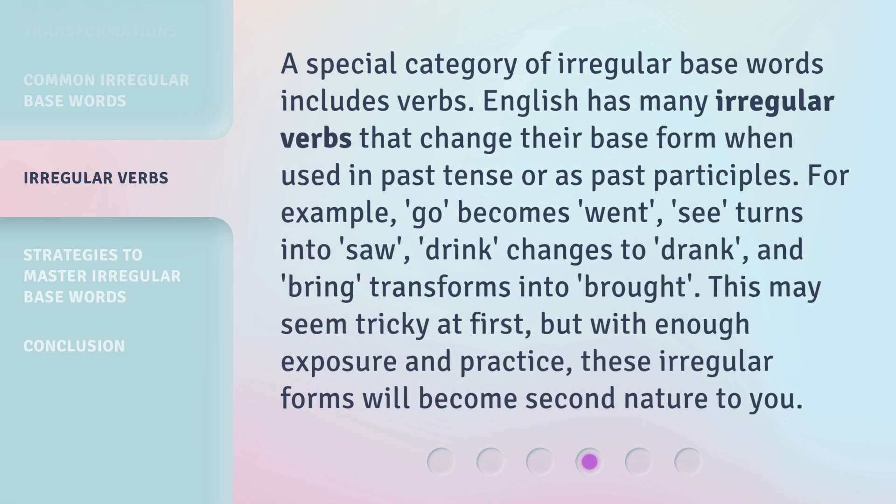A special category of irregular base words includes verbs. English has many irregular verbs that change their base form when used in past tense or as past participles. For example, go becomes went, see turns into saw, drink changes to drank, and bring transforms into brought. This may seem tricky at first, but with enough exposure and practice, these irregular forms will become second nature to you.